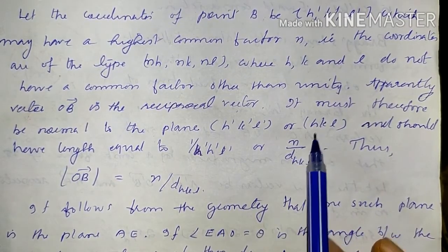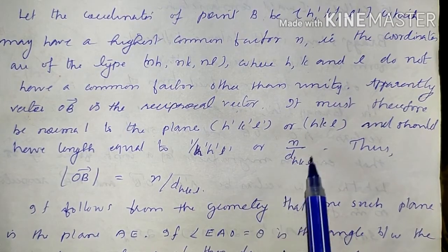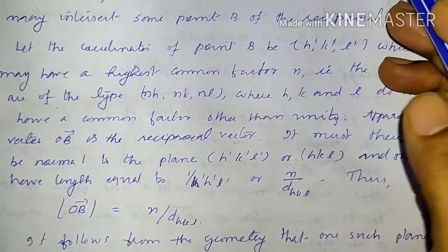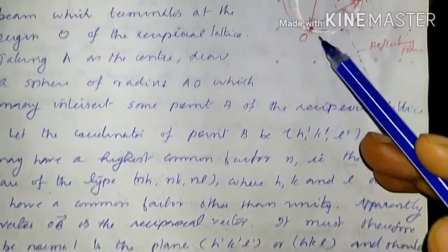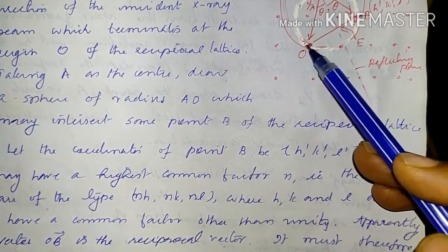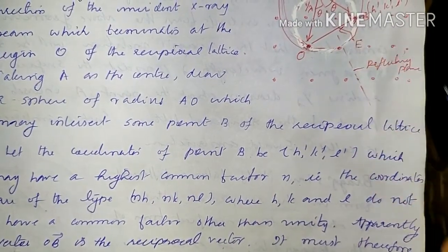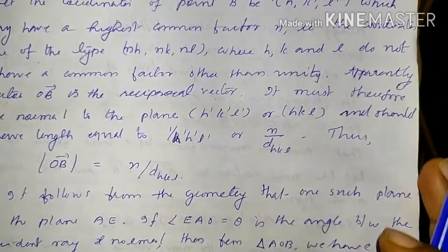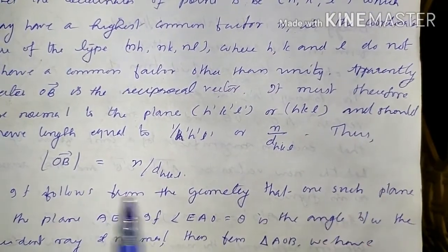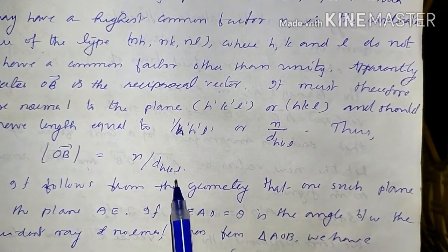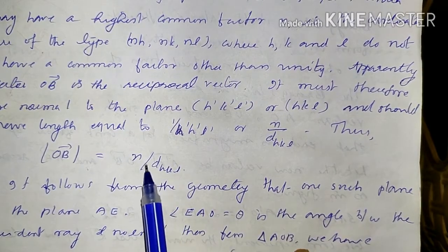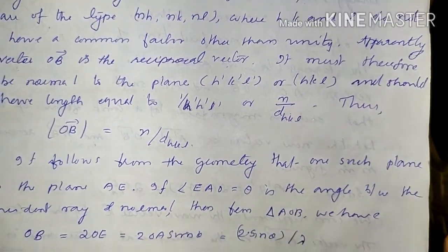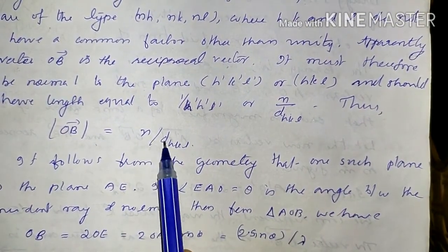So OB, connecting two lattice points in the reciprocal lattice, must be normal to the plane (H'K'L') or (HKL), and OB can be represented as N/d_{HKL}, since it is inversely proportional to the distance between two parallel planes.